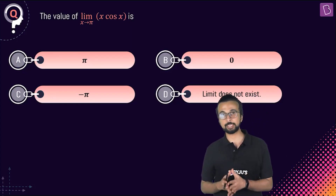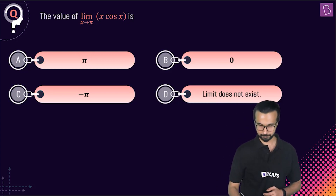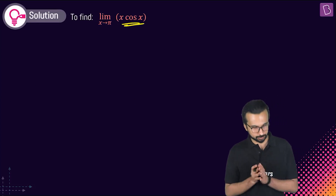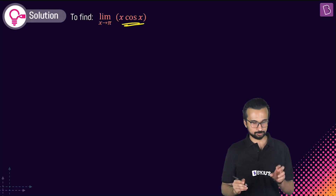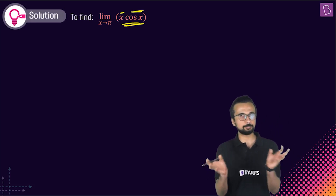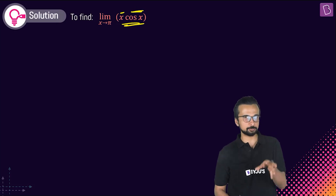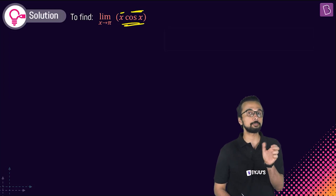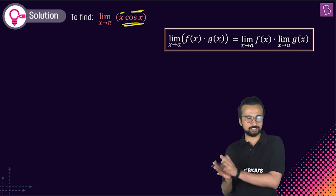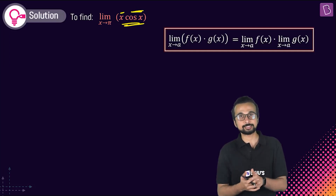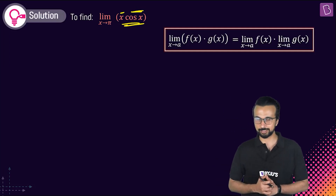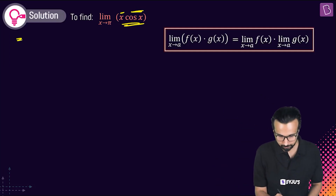In this question we need to find limit x tends to π of x·cos(x). We have two terms — x and cos(x) — multiplied together. The key idea: the limit of a product can be split into a product of two limits. So limit of f(x)·g(x) = limit f(x) × limit g(x).